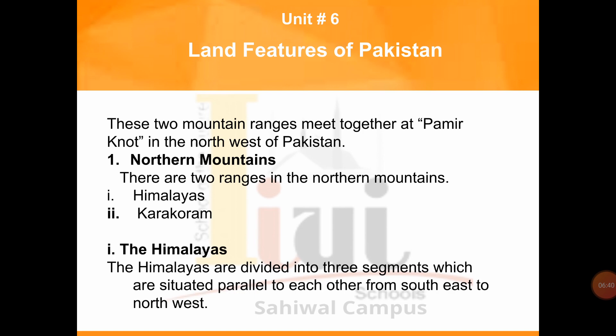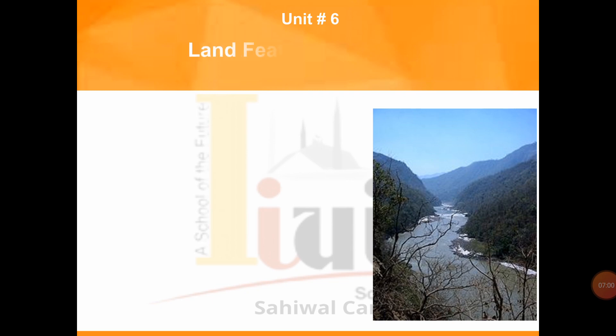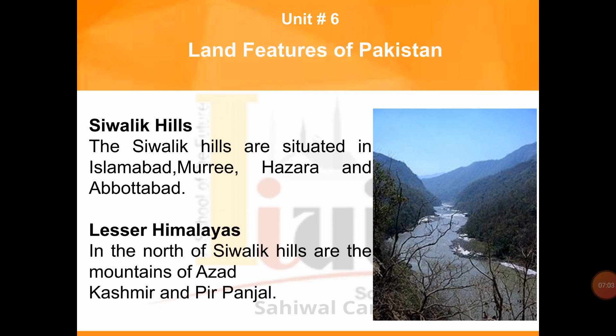Now let's move towards our first sub-segment of mountains, which is the Himalayas. The Himalayas are divided into three segments situated parallel to each other from south-east to north-west. The first is the Sivalik Hills, which are situated in Islamabad, Murree, Hunza and Abbottabad. The average height of these hills is about 800 meters. Dear students, you can underline this — Sivalik Hills, average height 800 meters.